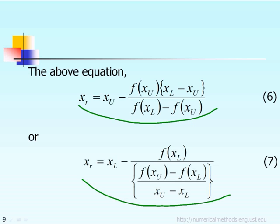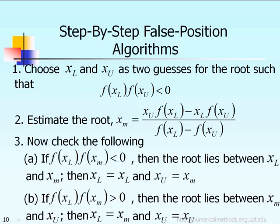So that is the false position method. Now let us work with some step-by-step algorithms. The first step for the false position method is to select the appropriate lower bound and upper bound as the two initial guesses. What it means is that xl and xu should satisfy this inequality — the function at xl multiplied with the function at xu must be negative. That is the first step.